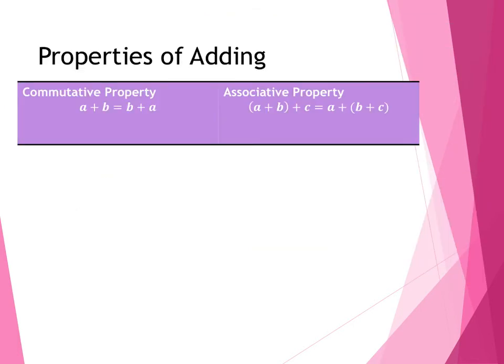Looking at these last couple of examples, there are two properties of adding that I want to talk about. The first one is called the commutative property. It says that if you add two numbers — A plus B — it would be the same thing if you were to flip them and do B plus A. For example, 3 plus 9 gives me 12. If I add them in the opposite order, 9 plus 3, I still get 12. So when you add numbers, the order in which you add them does not make a difference.